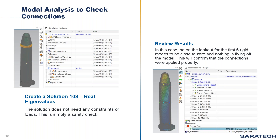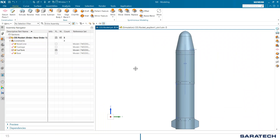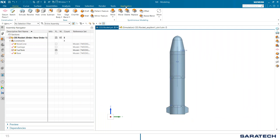Once connections are added, we'll conduct a quick modal analysis to check our connections — this is more of a sanity check. You don't need constraints or loads on your model; just create a Solution 103 real eigenvalues analysis and run it. What we want to see is that the first six rigid body modes are close to zero and nothing is flying off the model — that's how you know connections are set up properly. After the sixth mode, you'll start to see bending, but components should still remain connected.